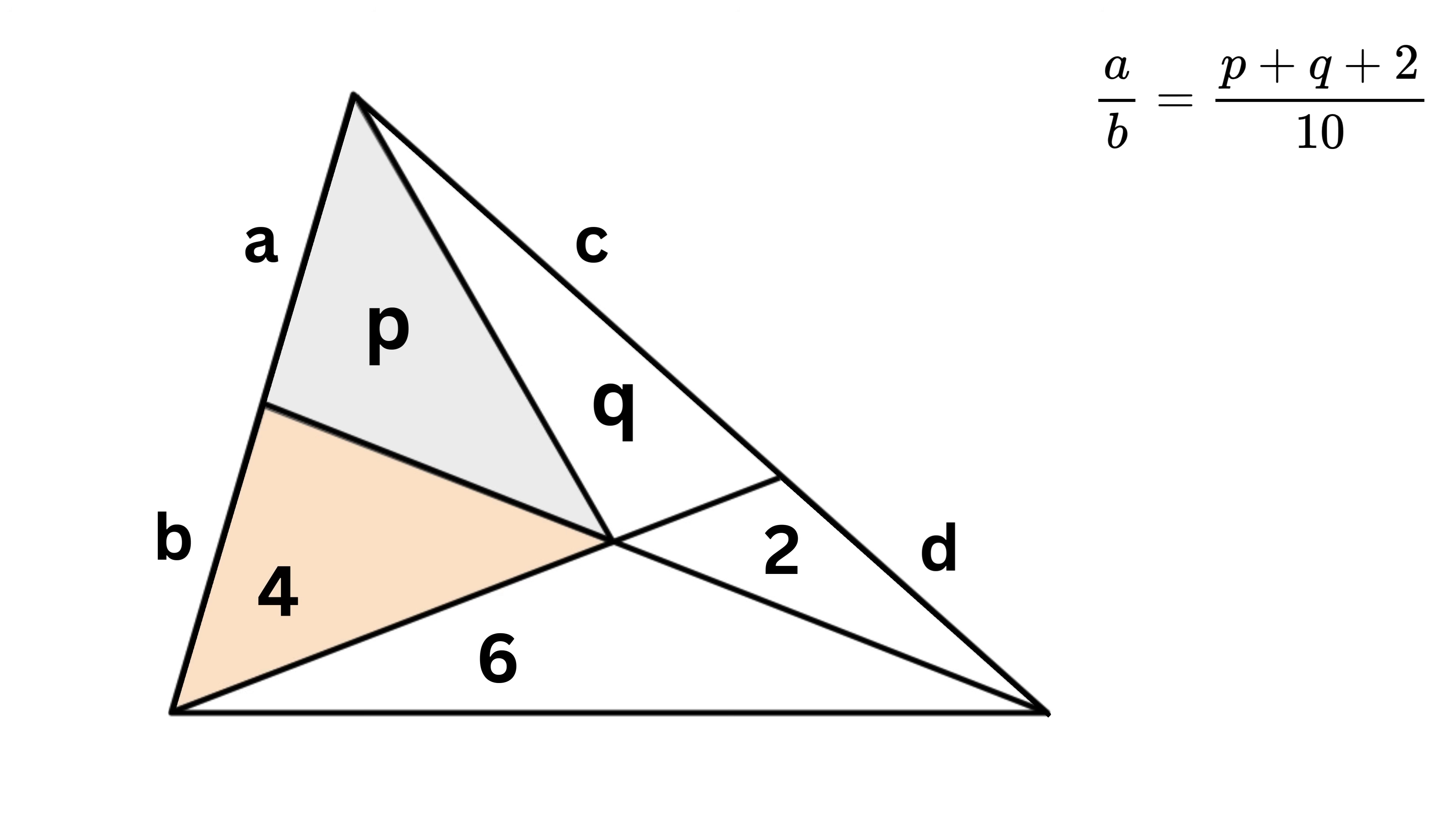Now look at these two triangles. Again, you can see that both of them have the same height, which is this. So, the ratio of area of both these triangles will be the same as the ratio of their bases, or area of this triangle is P over area of this triangle is 4 equals A over B. Noice! I am having goosebumps right now because from both of these ratios, we get P plus Q plus 2 over 10 equals P over 4. So, we have one relation between P and Q. We just need one more relation in order to find the values of P and Q.